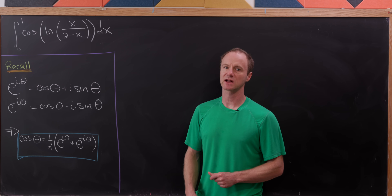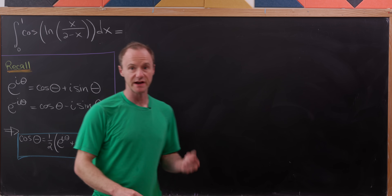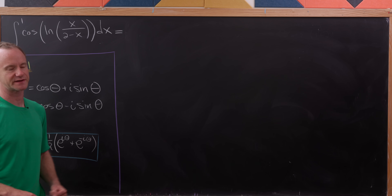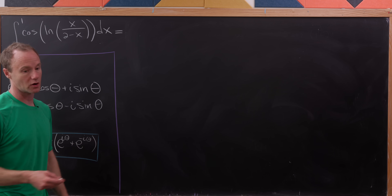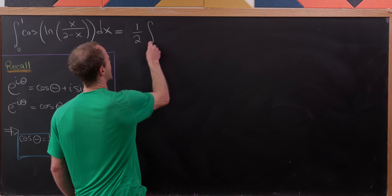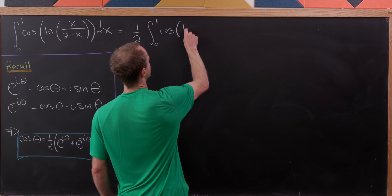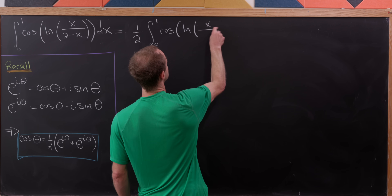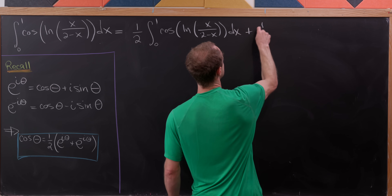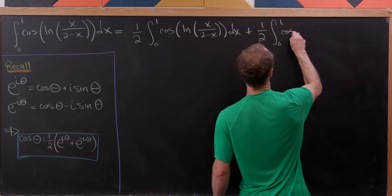We've got a couple of steps before we're going to use this. I'm going to write our given integral as half of itself plus half of itself, which is clearly a whole of itself. So we have one half the integral from 0 to 1 of cosine of natural log of x over (2 minus x) dx, plus another half of the same thing.